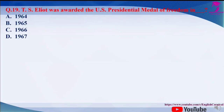Question number 19: T.S. Eliot was awarded the U.S. Presidential Medal of Freedom in dash — in which year was T.S. Eliot awarded the U.S. Presidential Medal of Freedom? The options are A. 1964, B. 1965, C. 1966, and D. 1967. The correct answer is A, that is 1964.